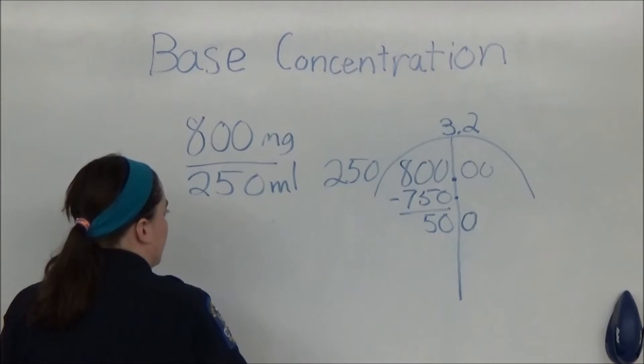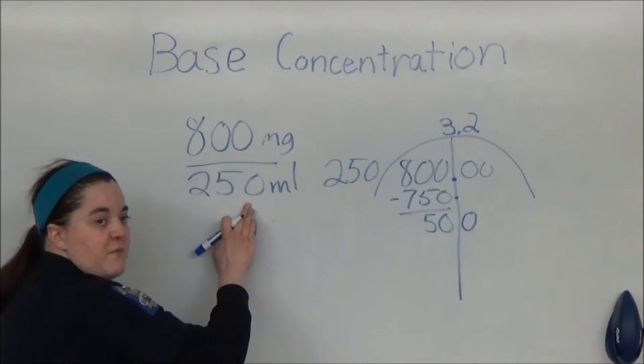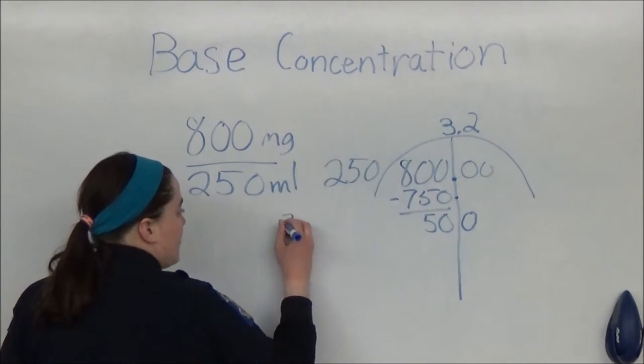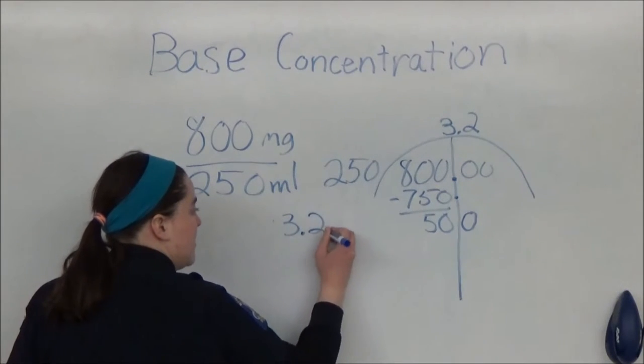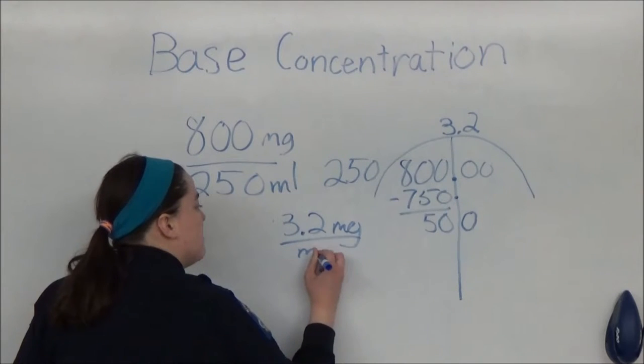So the base concentration of 800 milligrams in 250 milliliters of liquid is 3.2 milligrams per milliliter.